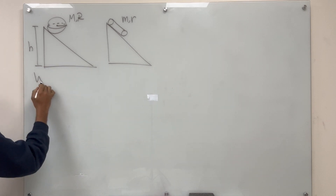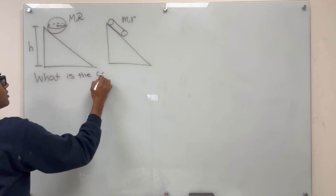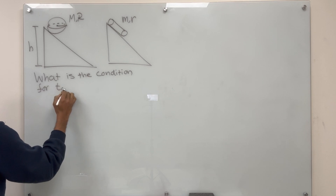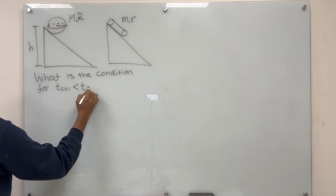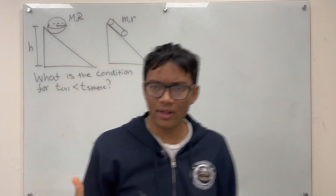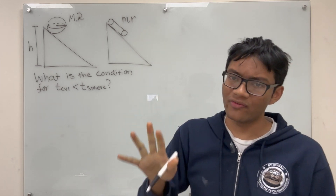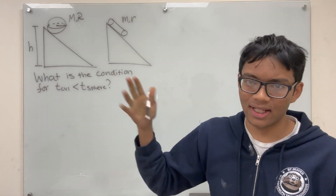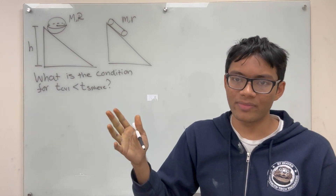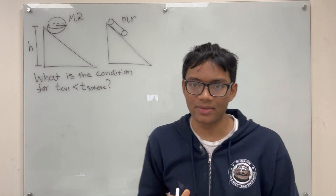What is the condition for the time of the cylinder to be less than the time of the sphere? So how do we solve this problem? Whenever you see this kind of problem asking about time, your first thought might be kinematics — writing down VF equals VI plus AT and extracting time from there. But it's actually much easier if we approach this from a conservation of energy perspective.